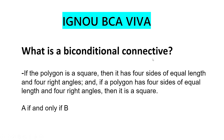What is a bi-conditional connective? Bi-conditional connective is 'if and only if B'. For example: if the polygon is a square, then it has 4 sides of equal length and 4 right angles. And if a polygon has 4 sides of equal length and 4 right angles, then it is a square. Both conditions satisfy each other.